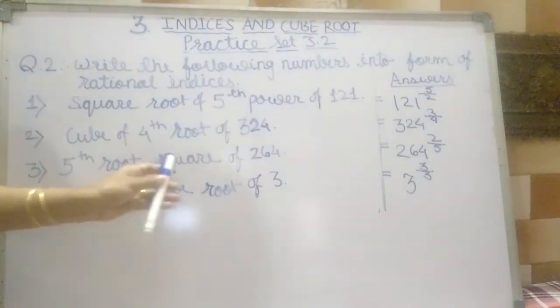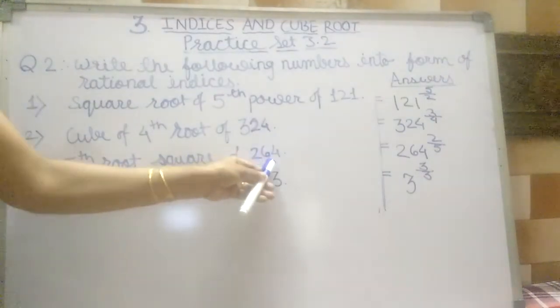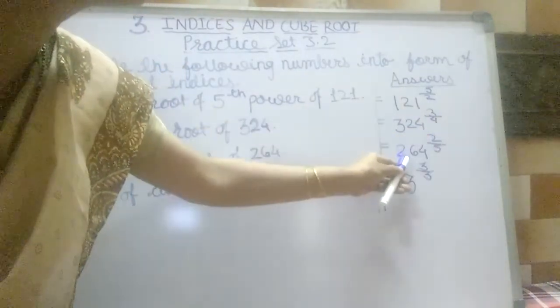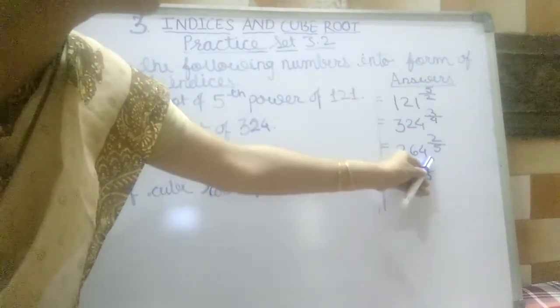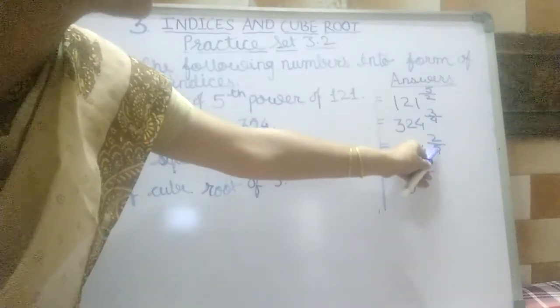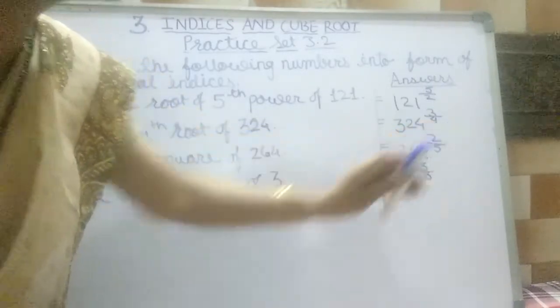5th root square of 264. 264 is the base. 2 is the numerator and 5 is the denominator, so 2 by 5 is the index.